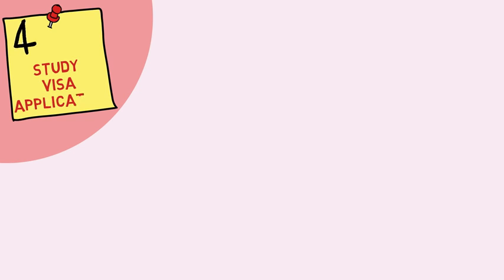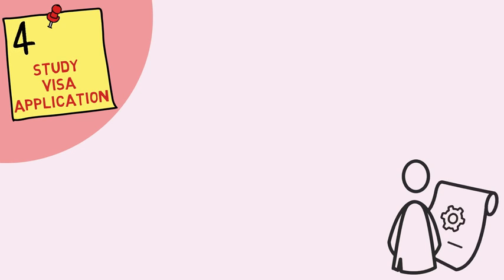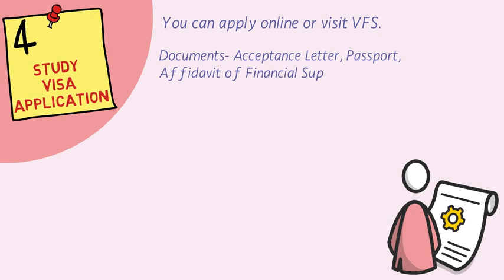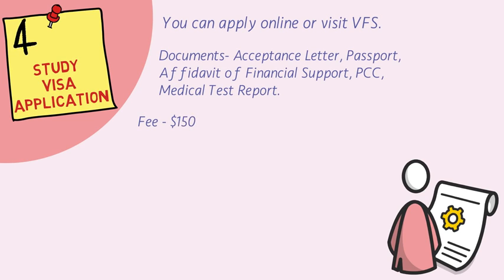The fourth and last step is the study visa application. You need to apply for the study visa or study permit to come to Canada. You can apply online or through your VFS office in your city. The required documents include: the acceptance letter, your passport, an affidavit of financial support, a PCC (police clearance certificate), and your medical test report. There may be a couple of other documents required as well. The fee for the study permit is $150.